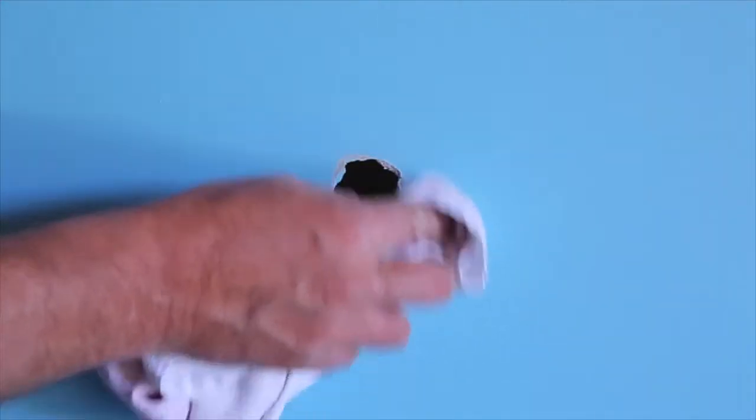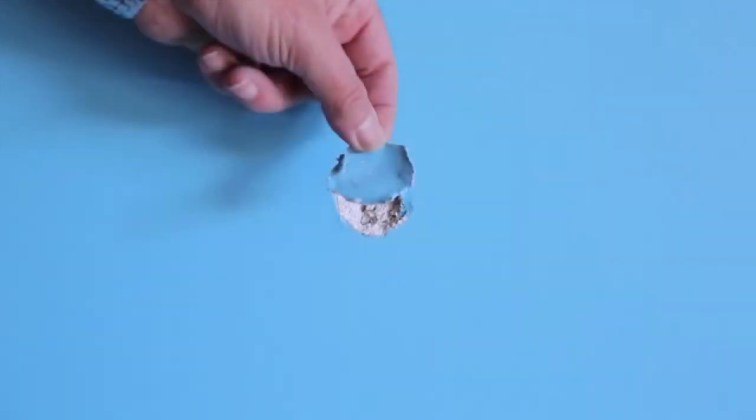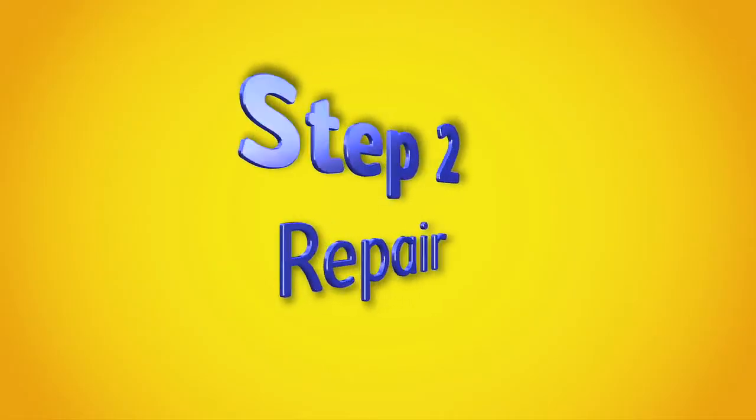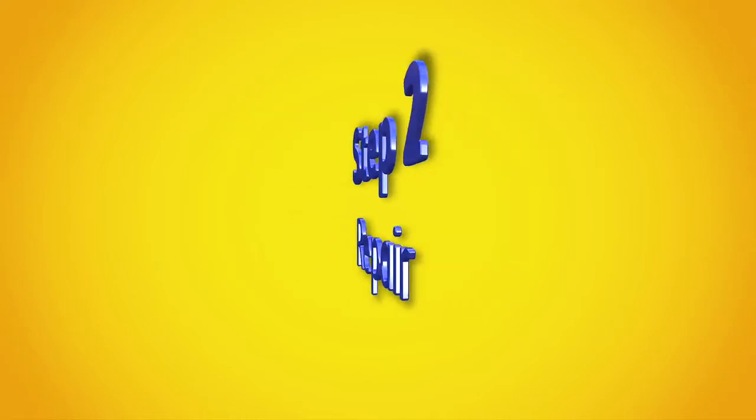Use the cloth to wipe the surface, removing any fine particles created when sanding. Save the loose or dislodged plaster to take to your local Thrifty Link Hardware store to match the paint to the color of the wall. Step 2: Repair.